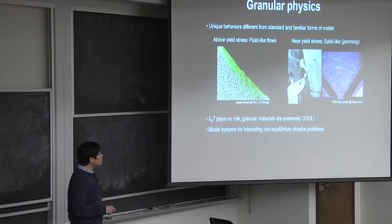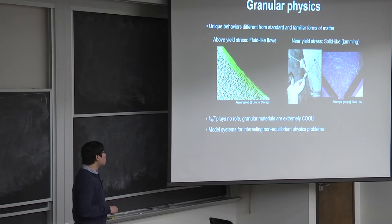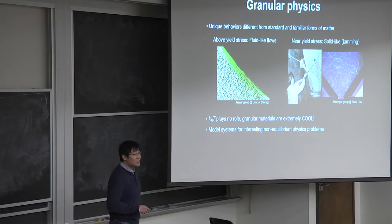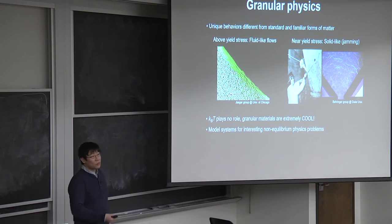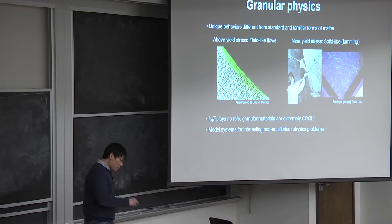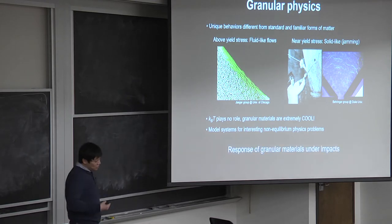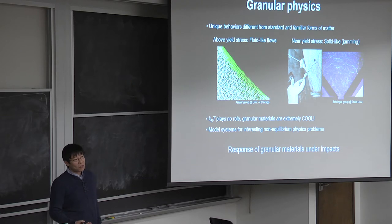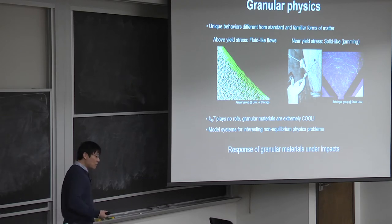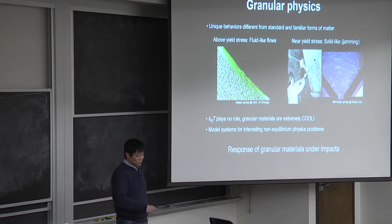Another thing that makes granular materials hard to deal with is because they are made of big grains. You may think you can use statistical mechanics or thermodynamics to describe these materials, but the answer is no — temperature does not play any role. You don't have thermal motion for the grain. Essentially, temperature is equal to zero for this type of materials. But granular materials do give us a very good model system for a lot of interesting non-equilibrium physics problems.